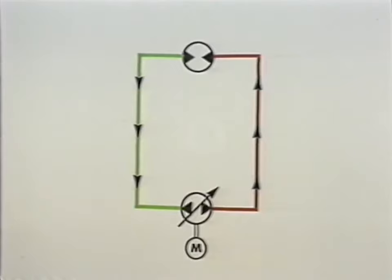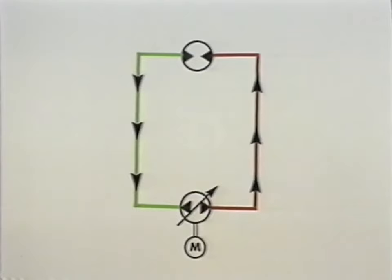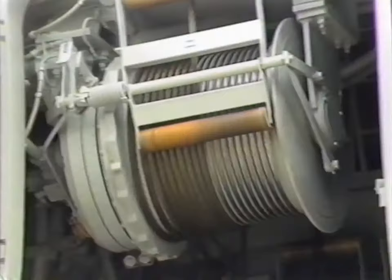With the variable pump, it is possible to vary the flow of oil and thereby regulate the speed of the hydraulic motor.